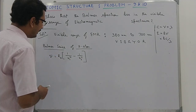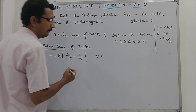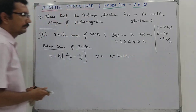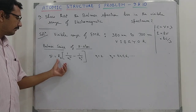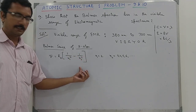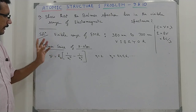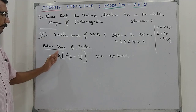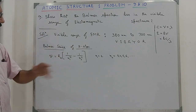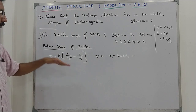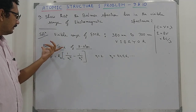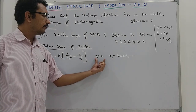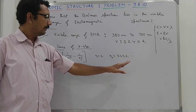When we talk about the Balmer series, n₁ equals 2 and n₂ equals 3, 4, 5, 6, and so on. So the Rydberg equation is ν̄ = RH × (1/n₁² − 1/n₂²). We have the Balmer series when n₁ is equal to 2 and n₂ is any value greater than 2.